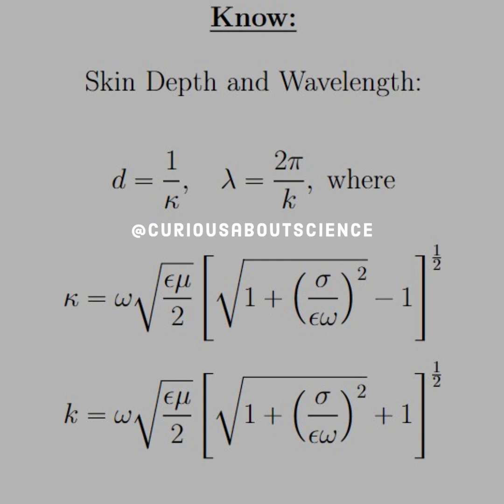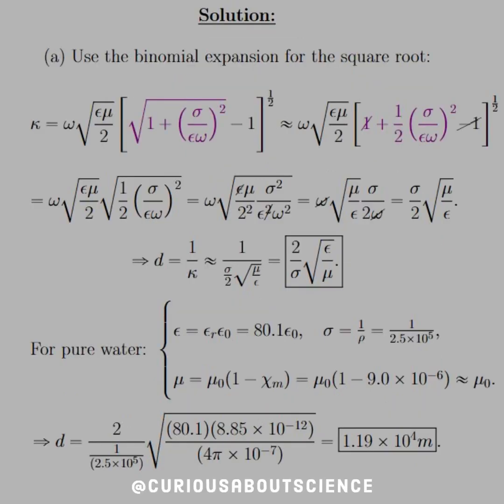So, let's see how we can approximate it. So here for part A, we want to use the binomial expansion for the square root. Okay, again, this only works because sigma is much less than epsilon omega. Okay, so we're able to expand that square root out to 1 plus 1 half, thanks to the fact that that fraction is much less than 1.